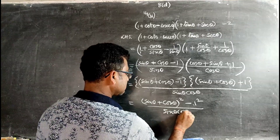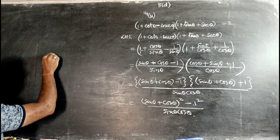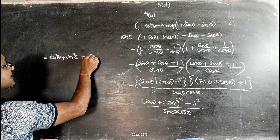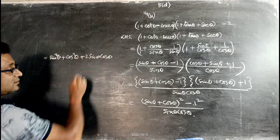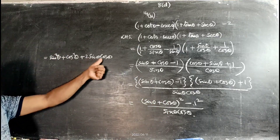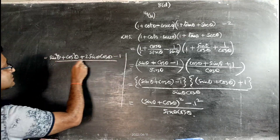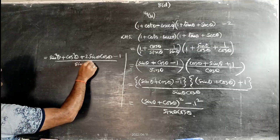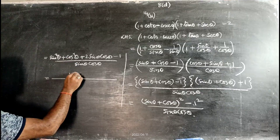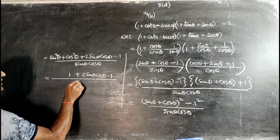Expanding (sinθ + cosθ)² using the formula a + b whole square: a² + b² + 2ab, we get sin²θ + cos²θ + 2sinθcosθ - 1, divided by sinθ·cosθ.